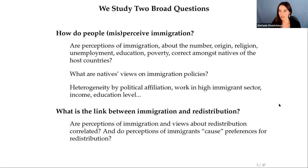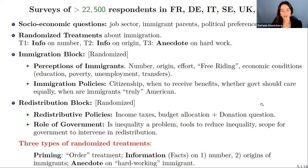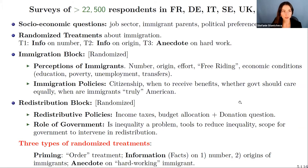There are theories in political economy and political science suggesting that generosity doesn't travel as well across national, ethnic, or religious lines — that people support more redistribution when it benefits those more similar to them. In this project we run surveys in six countries, adding Germany to the mix, with over 22,500 respondents, mainly conducted from November 2017 to March 2018.